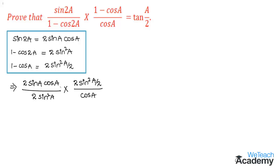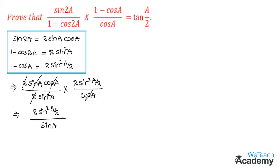Now let us simplify. The 2 in the numerator and 2 in the denominator get cancelled. Similarly, sin a in the numerator and sin a in the denominator get cancelled, and then cos a also gets cancelled. So we are left with 2 sin squared a by 2 divided by sin a.